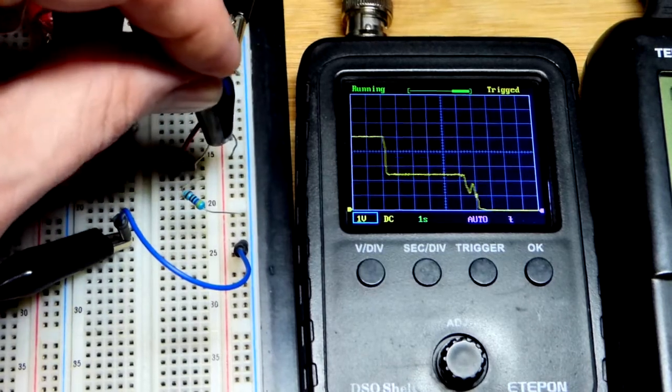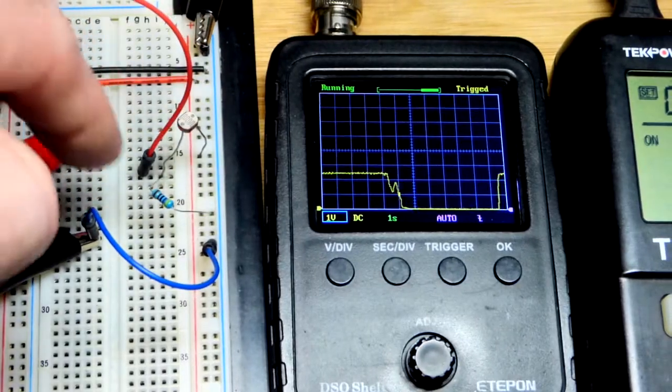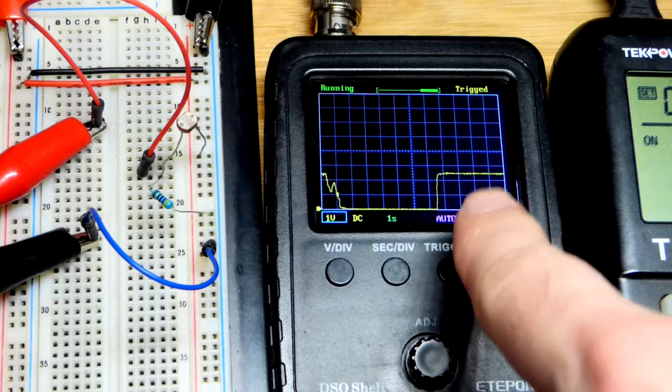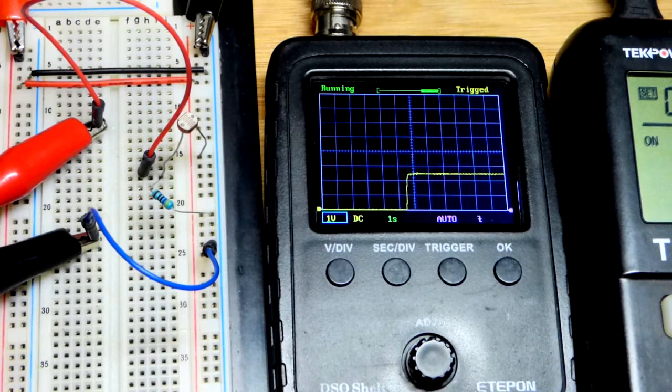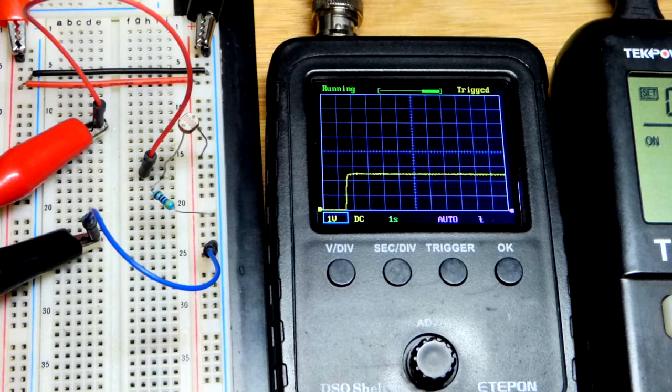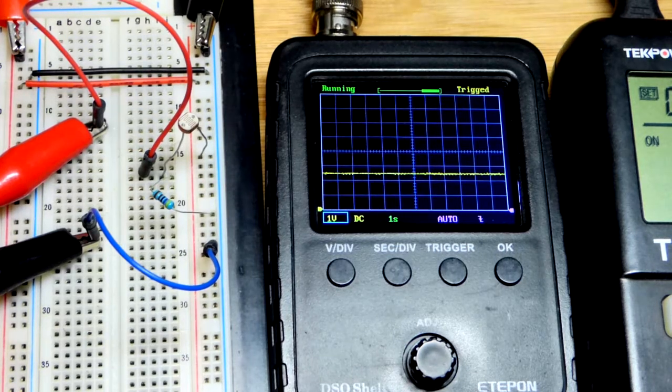So again you don't power stuff with these. You use this as a signal voltage just like it is telling the oscilloscope the voltage. It's not powering the oscilloscope, just letting it know and the oscilloscope is responding accordingly.